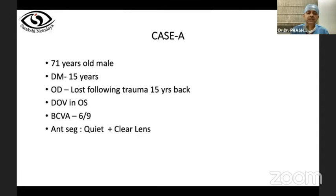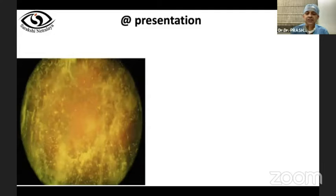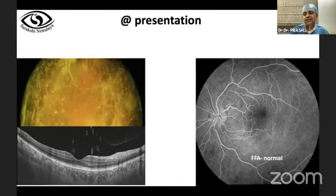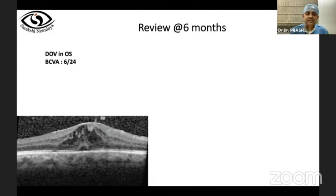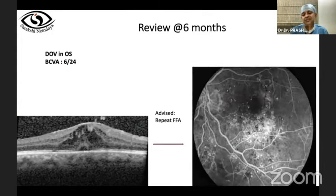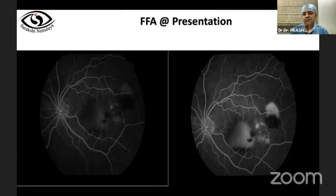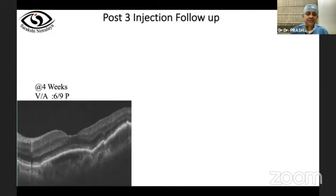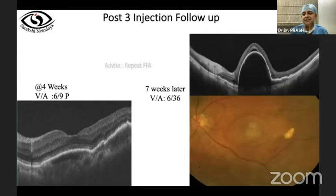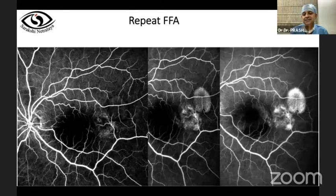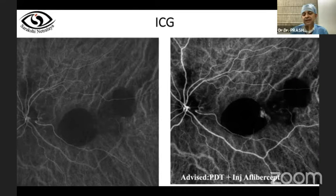For AMD and PCV: a 59-year-old female with multiple cystic swellings and PEDs in the left eye. FFA showed pooling and leakage; treated with Aflibercept. Vision improved to 6/9, but seven weeks later decreased again. Repeat FFA and ICG revealed leaks and a polyp on ICG, modifying treatment to combine anti-VEGF with PDT. Another case: 42-year-old female who had undergone focal laser for CSR elsewhere. OCT suggested RPE irregularity and PED; FFA showed leak right in the FAZ, changing the diagnosis to CNVM.